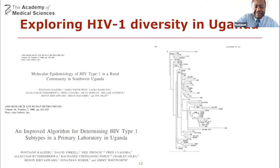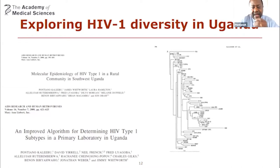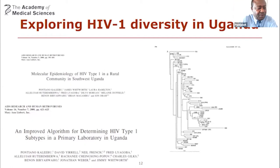My work from the beginning looked at HIV diversity, to understand what this means. Over a period of time we really understood that HIV was quite diverse, especially on the African continent. We described a number of HIV subtypes, including HIV subtype G, which was a minority at that time, but there was quite a high diversity of HIV.